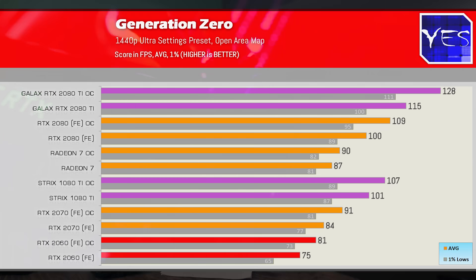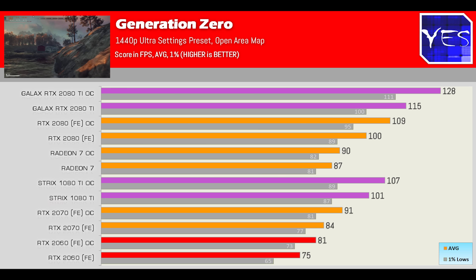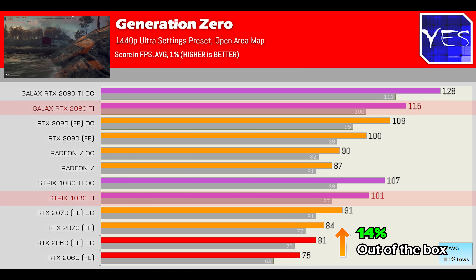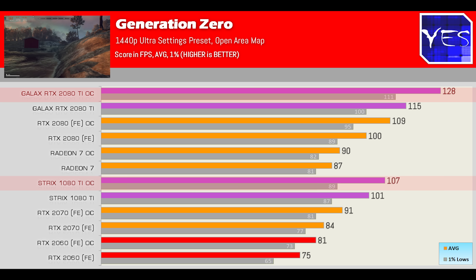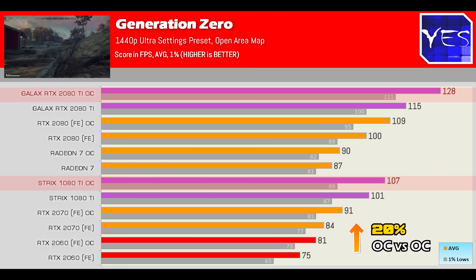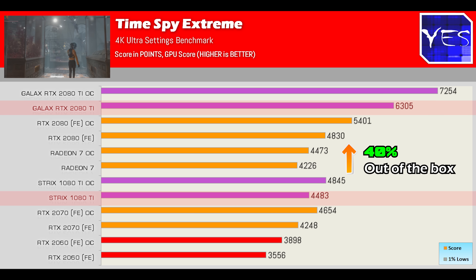Generation Zero, another new release title, showed a 14% boost out of the box and a 20% boost once overclocked at 1440p max settings. Finally, Time Spy Extreme showed a 40% difference stock versus stock, and a 50% difference once overclocked — showcasing the maximum potential between these two cards.